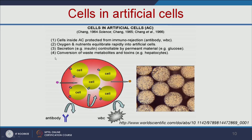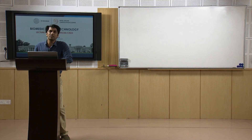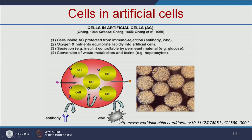In artificial cells, the cells are protected in the artificial membrane and shielded from immune rejection. When you inject cells directly into the body, they will be rejected by the immune system. But when these cells are protected in polymeric capsules, they are shielded from immunorejection. Oxygen and nutrients can easily pass through the membrane. For example, if pancreatic cells are used, they can secrete insulin depending on glucose levels. If liver cells are encapsulated, they will convert metabolic waste and toxins.